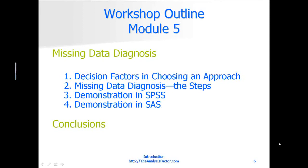Finally, in module five we'll talk about missing data diagnosis, which is really the fun part. Missing data diagnosis is actually the first thing you would do if you were actually implementing a missing data approach. I'm talking about it last because I want you to understand all the issues involved in the different approaches, so you know what you're looking for and why it's important as you're doing the diagnosis. We'll go into details of the patterns to look for, the analyses to get those patterns, how to figure out which mechanism you're working under, and what you need to consider in choosing each approach. At the very end we'll go through some brief conclusions and wrap things up.